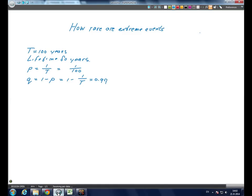is q to the power 80 equals (1 minus 1 over T) to the power 80 equals 0.45 or 45%.